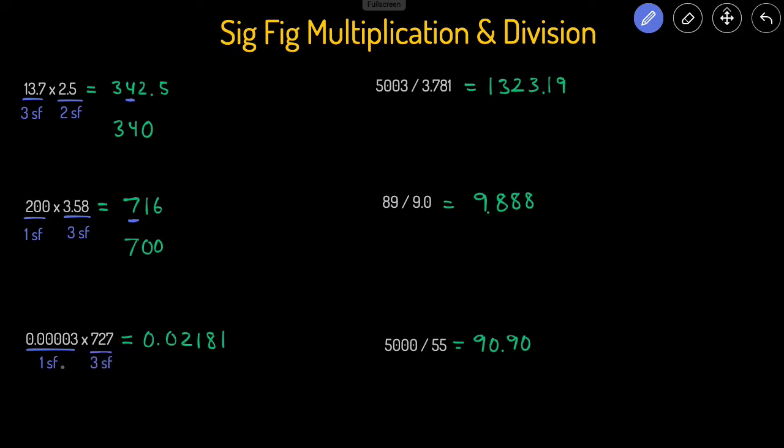So that means our final answer will only have one sig fig. The first sig fig in this problem, in this number, is just two, because again the leading zeros do not count.